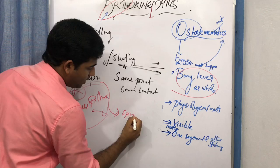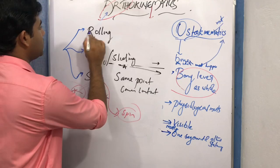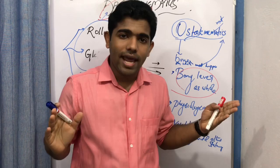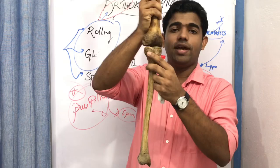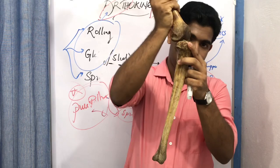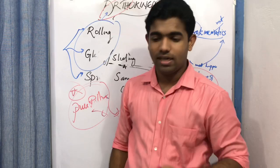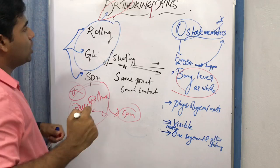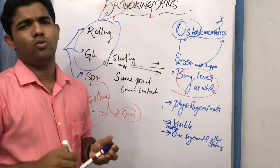In the human body, rolling and gliding occur simultaneously in the joint. For example, in the femur going into flexion there is a posterior rolling with a simultaneous anterior glide — posterior roll plus anterior glide — as discussed in knee joint biomechanics. Rolling and gliding always take place simultaneously.